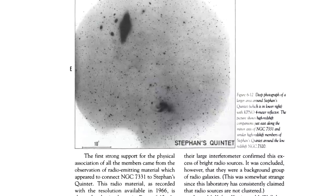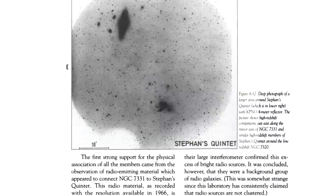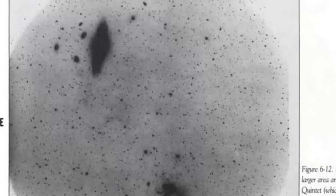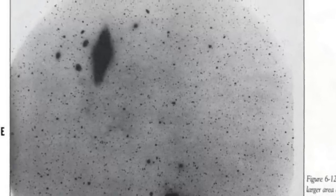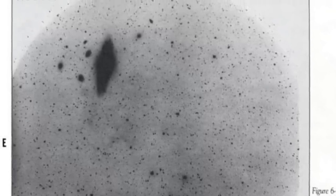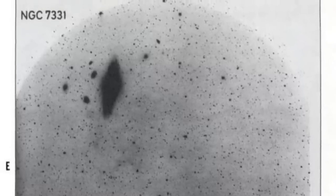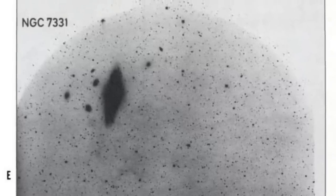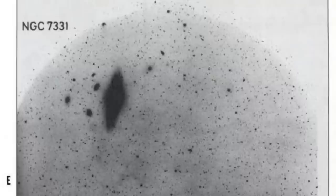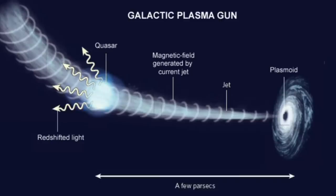The bridge continues on the opposite side of NGC 7331 to a cluster of quasars, which coincidentally have similar redshifts to the high redshift members of the quintet. The bridge also appears on x-ray images. This is obviously another instance of paired ejection from an active galaxy, and plasma astronomers would call the bridge an intergalactic Birkeland current.